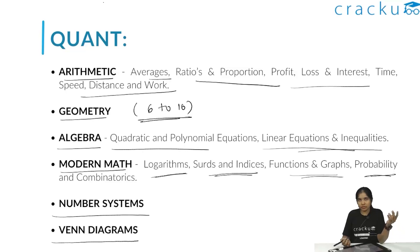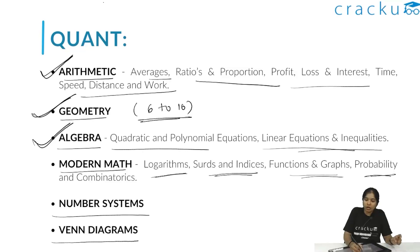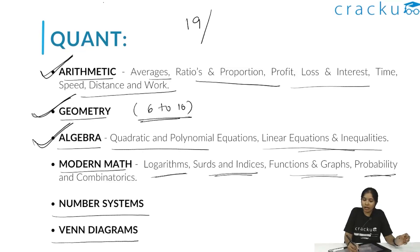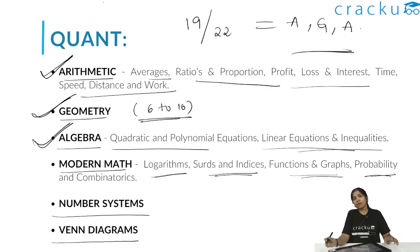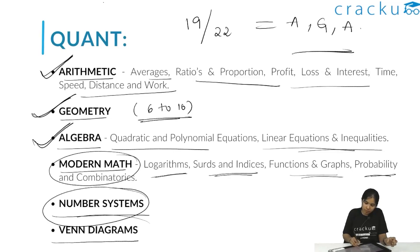If you want to score between 95 to 99 percentile, you can mostly concentrate on arithmetic, geometry, and algebra. Based on past trends, we can expect around 19 out of 22 questions from these three topics alone. If you're targeting 99 percentile and above in Quant, you can additionally concentrate on modern math, number system, and Venn diagrams.